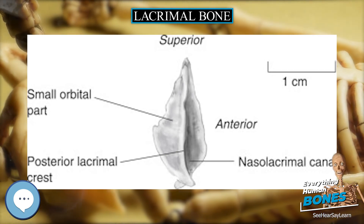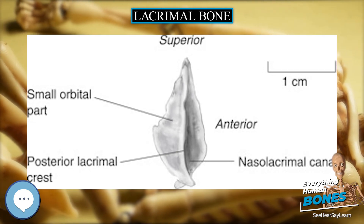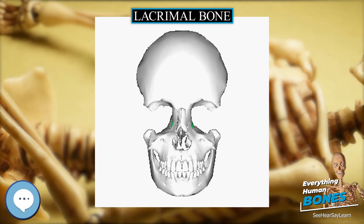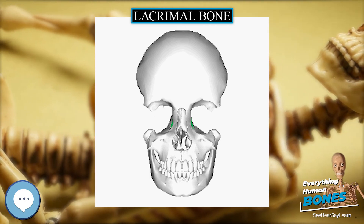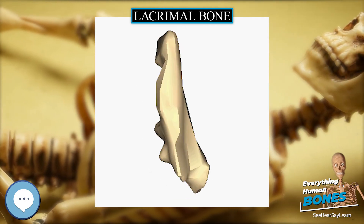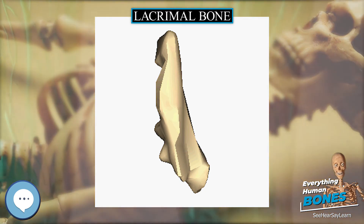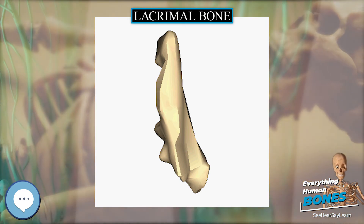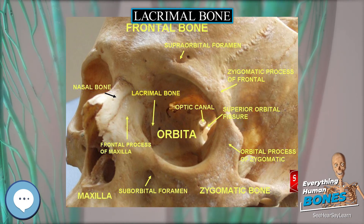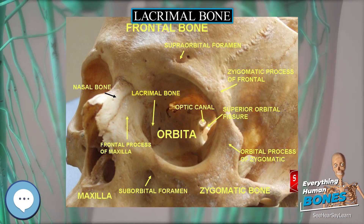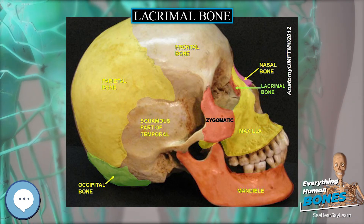In dinosaurs, the lacrimal bone usually defines the anterior rim of the orbit (eye socket) and the posterior rim of the antorbital fenestra. In some theropods, for example Allosaurus, Ceratosaurus, and Albertosaurus, the upper part of the lacrimal bone grew in such a manner as to form a horn on the top of the dinosaur's head, usually situated above and anterior to the eye.